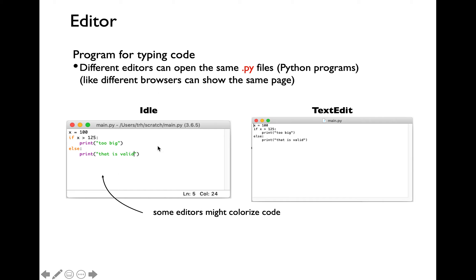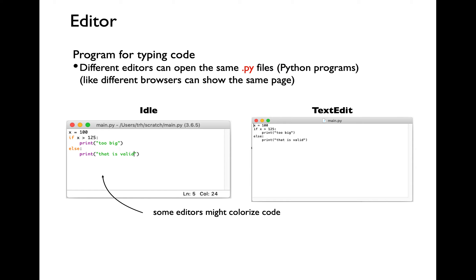The difference is syntax highlighting. Syntax highlighting refers to the fact that the editor uses different colors to highlight certain parts of your Python code. For example, you have orange, purple, and green color here. Which editor you prefer is totally up to you, but I would encourage you to use the IDLE editor or some other editor which performs syntax highlighting. I will be using the IDLE editor for the demos that I go through as part of this course.